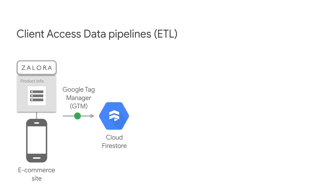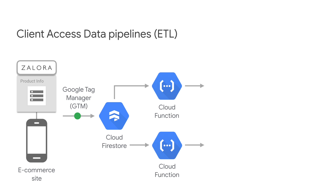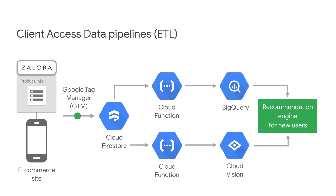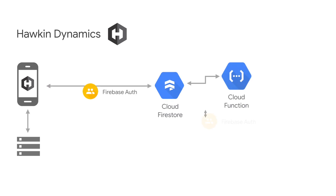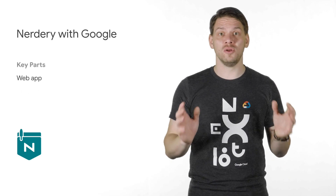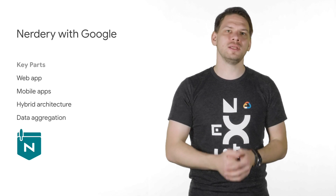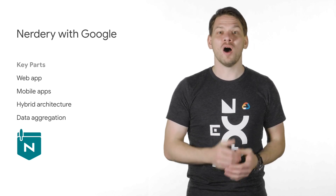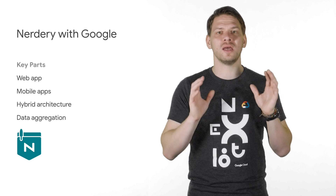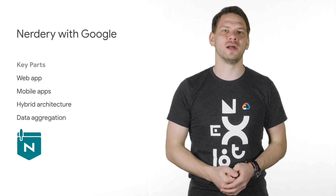If you want to know how some customers are using Cloud Firestore, learn from Guesswork, who built an ML-driven e-commerce platform on Cloud Firestore to help companies like Zalora with product recommendations; or Haken Dynamics, which focuses on analyzing sports performance with hardware and software to optimize athletic performance; and finally Notary, who built the Next 2018 conference website and mobile app using Cloud Firestore. All of these use cases give insights into architecture and best practices.